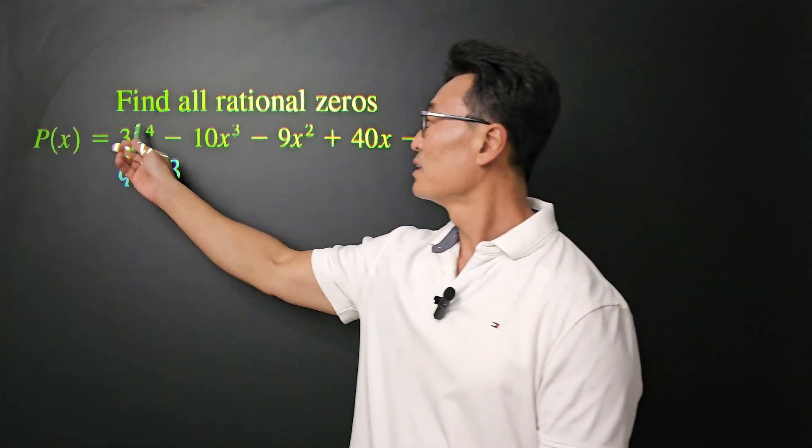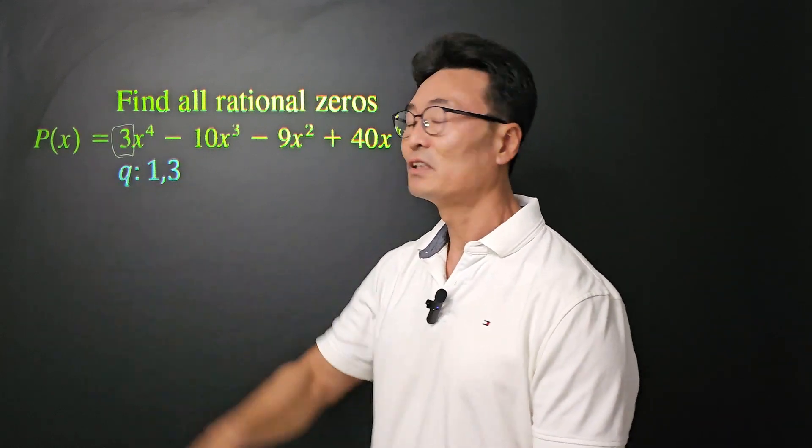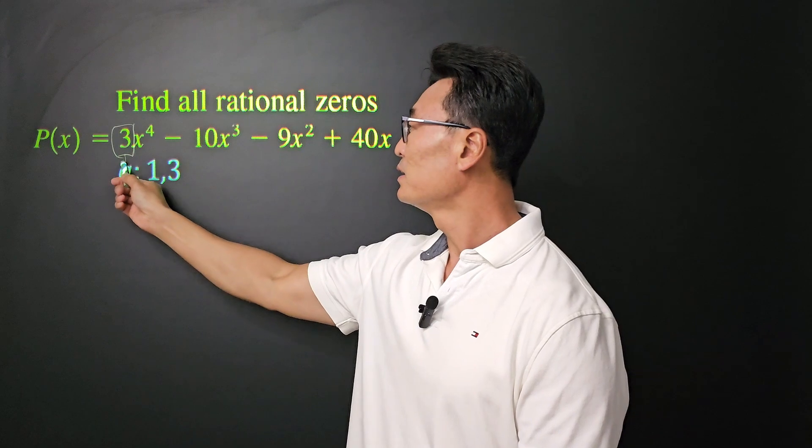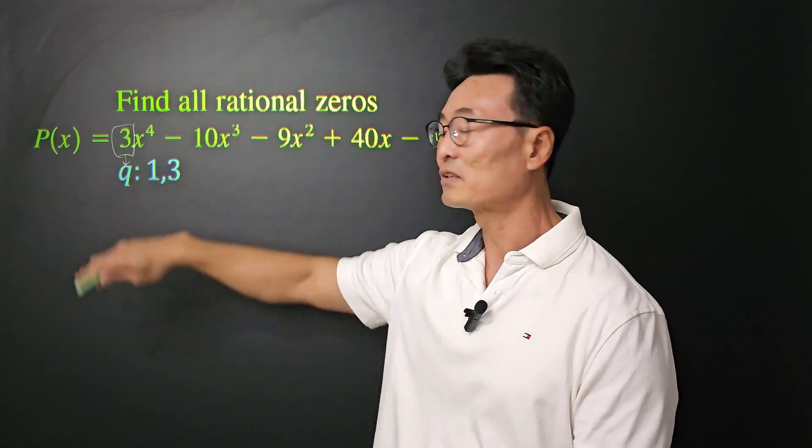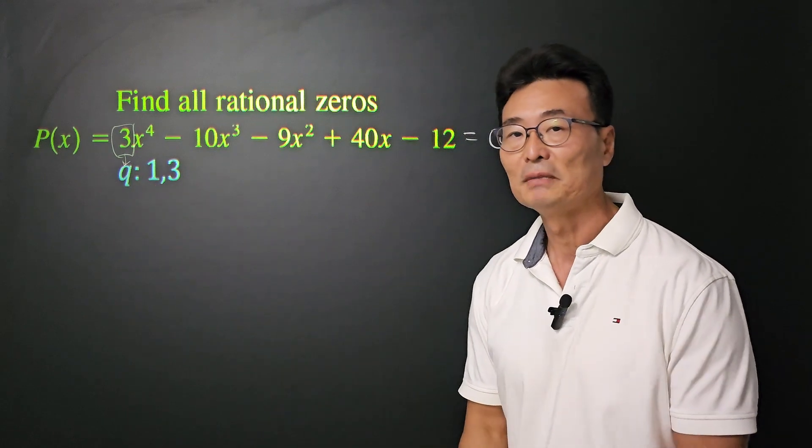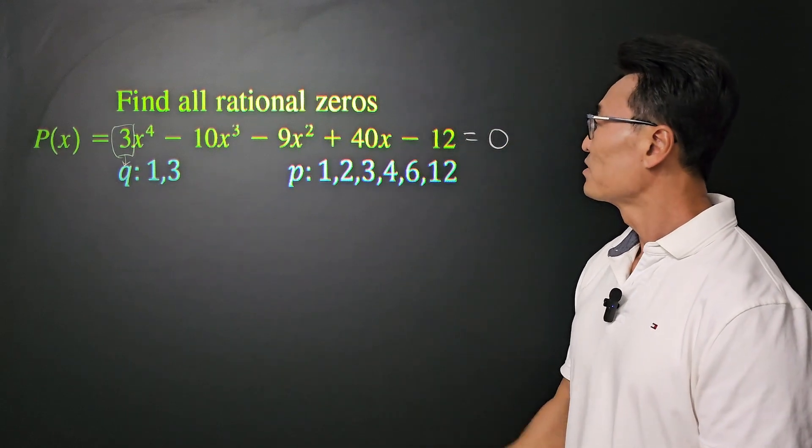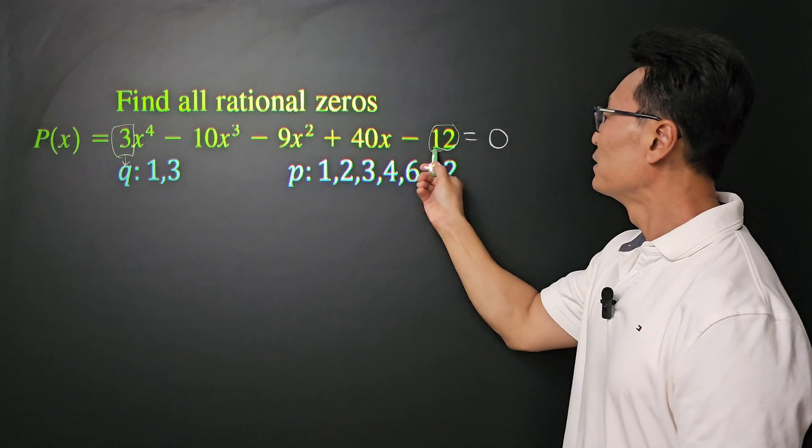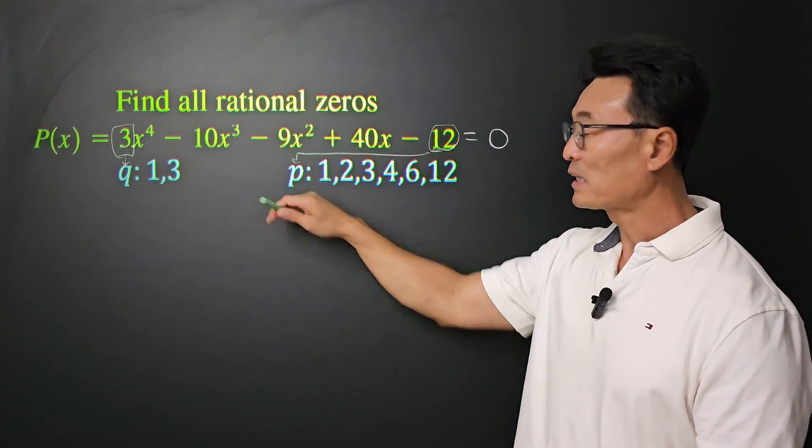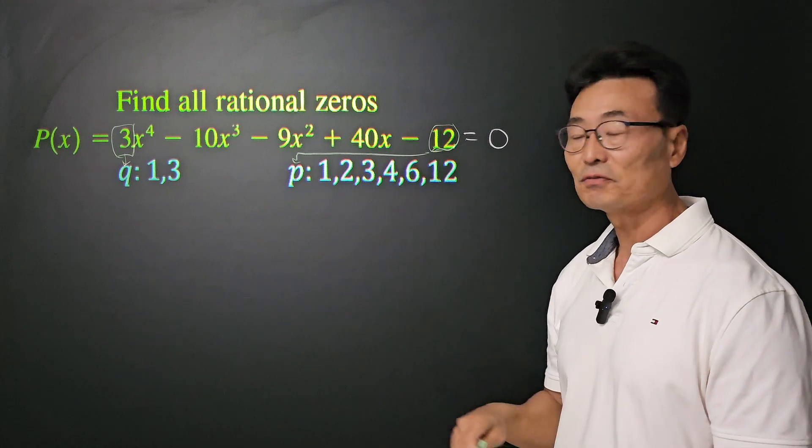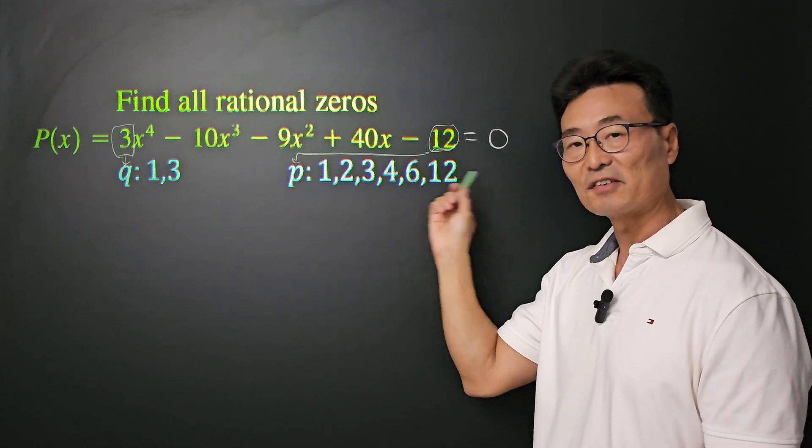First, let's go ahead and set the number 3, the coefficient of x to the 4, being the value of q, and find all the factors of q or factors of 3, which are 1 and 3. Next, we want to set 12 be the value of p and find all the factors of p or factors of 12, which are 1, 2, 3, 4, 6, and 12.